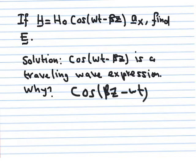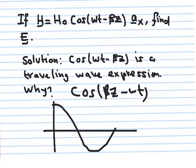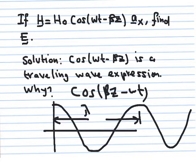The expression cosine(ωt − βz) represents a traveling wave. We can rewrite it as cosine(βz − ωt), which is equivalent because cosine is an even function. At t = 0, this becomes cosine(βz), a typical cosine with respect to z. We can plot it as a cosine function, where beta determines the spatial separation. The separation between two peaks is the wavelength, equal to 2π over beta.